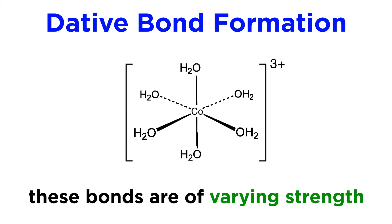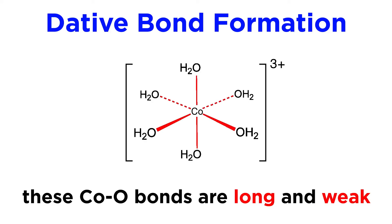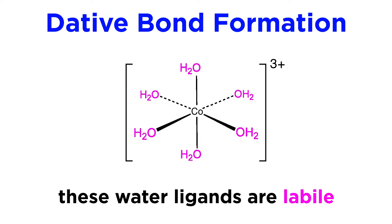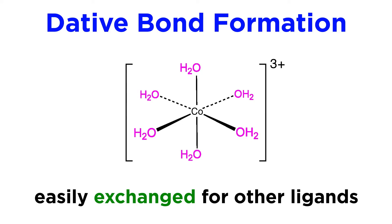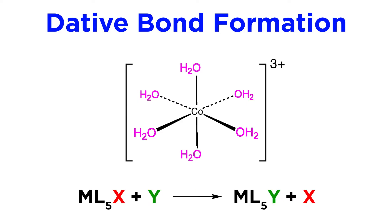These dative bonds are of varying strength. For example, these cobalt oxygen bonds are particularly long and weak. Many metal ligand bonds are quite weak, in fact, and in such a case we would refer to these ligands as labile, which means that they are easily exchanged for other ligands that make stronger bonds. Indeed, new ligands displacing existing ligands in a transition metal complex is a very important reaction that we will be discussing in great detail later.